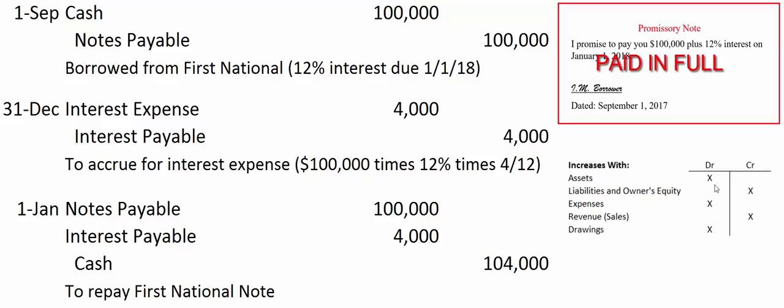Cash is an asset — assets increase with debits, which means they decrease with credits. If this note had been due February 1st, we'd also include another month's $1,000 of interest expense as a debit and write a check for $105,000. That's all there is to notes payable. We have to make adjusting journal entries to accrue for interest expense — maybe every month, every quarter, every six months, or every year, depending on the size of the company and how much debt they have.